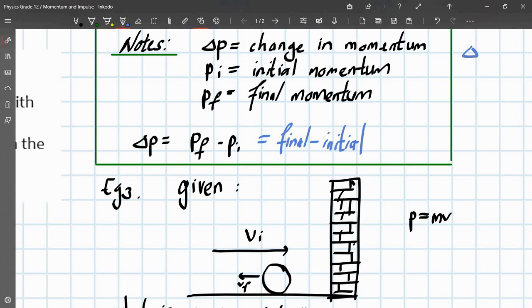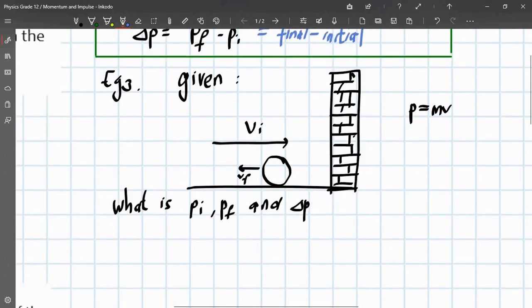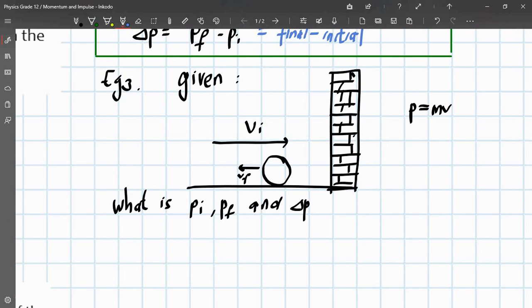So, we can do an example here just to illustrate how to calculate this. We're given a ball that hits the wall at an initial velocity as shown by this arrow here. That's the initial velocity. And that's the final velocity. So, what we required is to get pi, pf, and the change in p. Initial momentum, final momentum, and change in momentum.